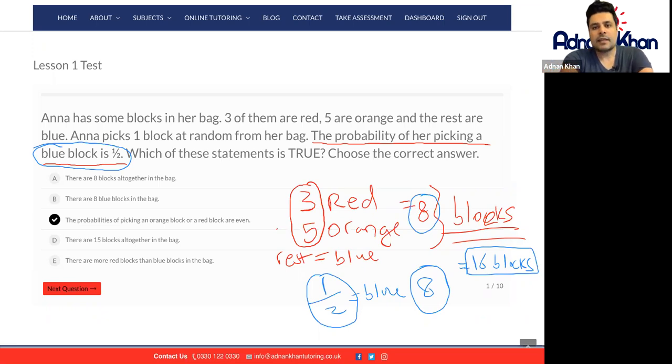So let's have a look at the questions one by one and see which actually make sense. A says there are eight blocks altogether in the bag. Well we know that's not true because there are sixteen blocks in the bag. So let's just cross that out.